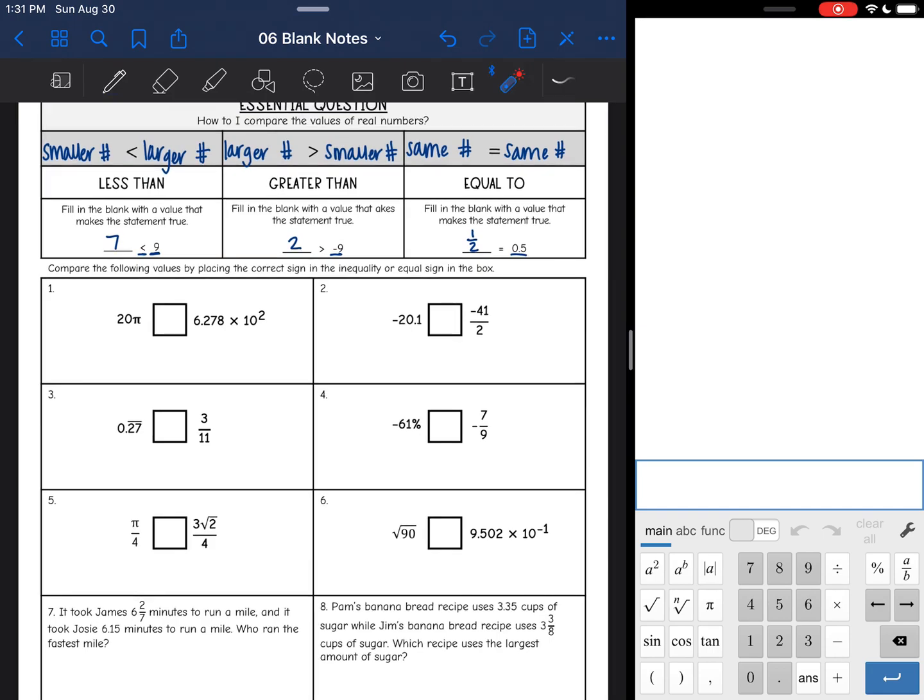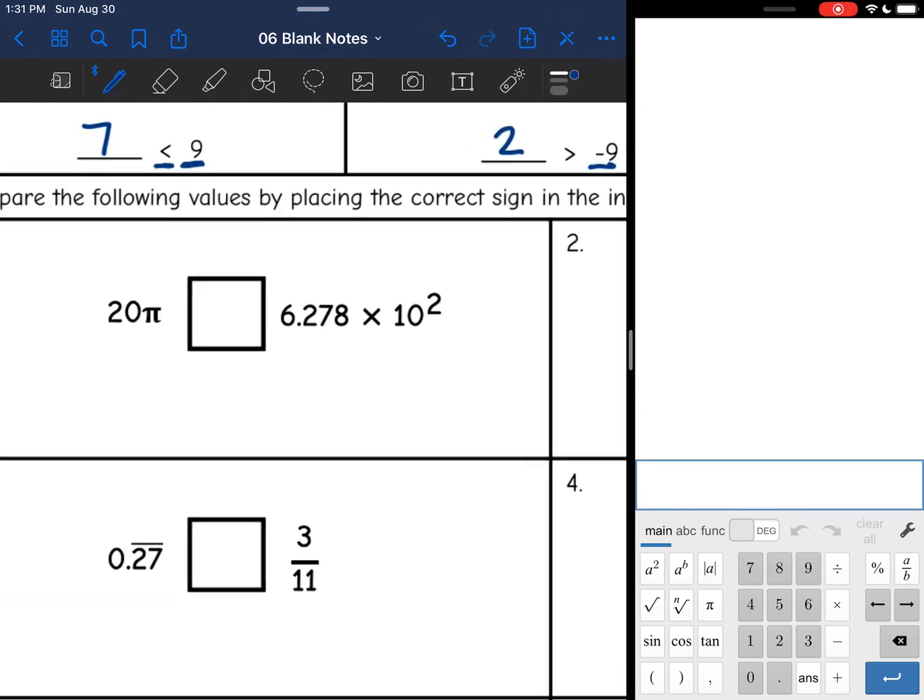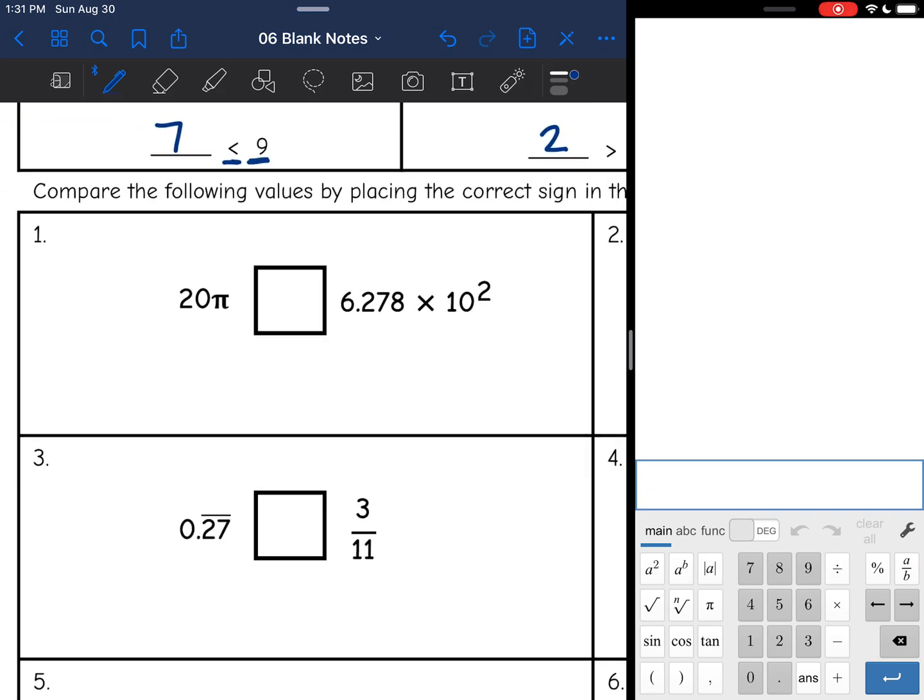They want us to compare the following values by placing the correct inequality sign or equal sign in the box. So first thing that I'm going to need to do is convert these numbers into something that is easier to compare them. This is an irrational number with pi. This is scientific notation. It's really hard to gauge which number is bigger or smaller. So I'm going to convert to decimals using the Desmos calculator to the right over here. So I'm going to do 20 times pi is 3.14 and I get 62.8.